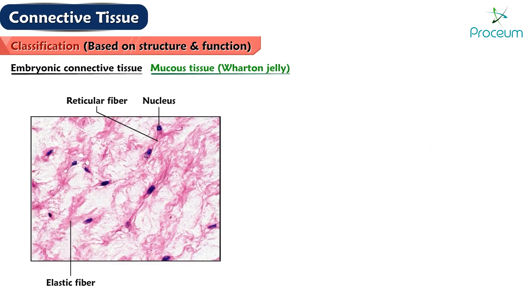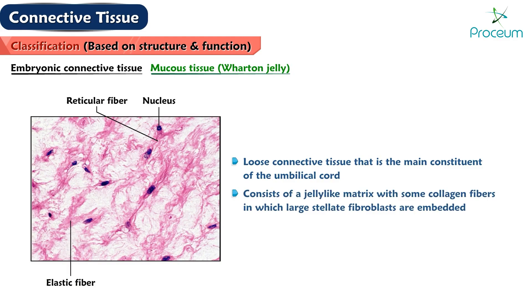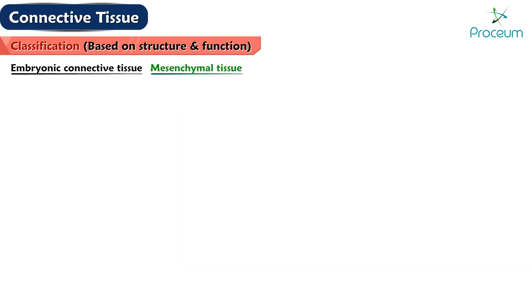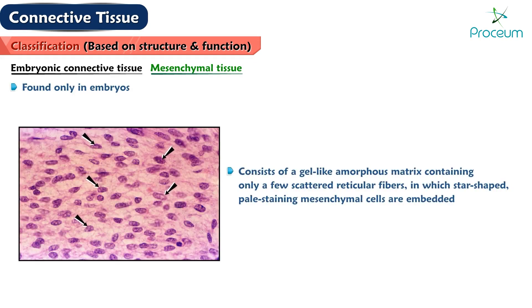Embryonic connective tissue includes mucous tissue, or Wharton's jelly, which is the main constituent of the umbilical cord. It consists of a jelly-like matrix with some collagen fibers in which large stellate fibroblasts are embedded. Mesenchymal tissue is found only in embryos. It consists of a gel-like amorphous matrix containing only a few scattered reticular fibers in which star-shaped, pale-staining mesenchymal cells are embedded. Mitotic figures are often observed in these pluripotential cells.